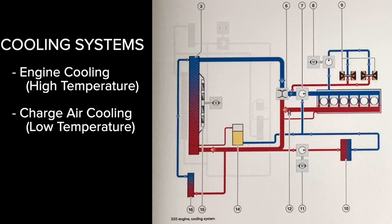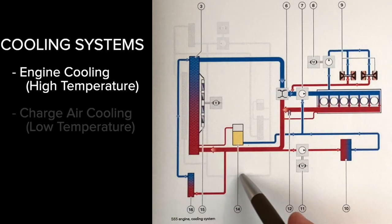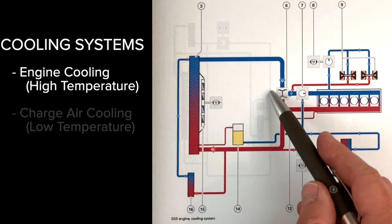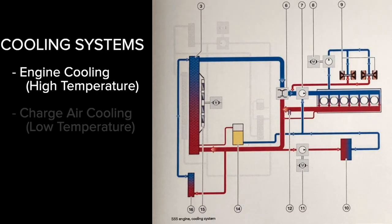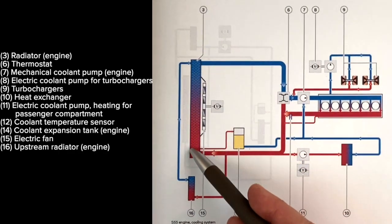Now this diagram focuses on the engine cooling side of it. You can see if you look closely in light gray they have grayed out the previous diagram's section on the charge air cooling. So it's really helpful to look at these as two separate systems.